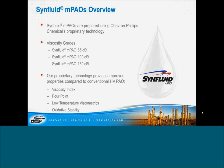Thank you very much, Myles, and thank you, Amy, for that introduction. We'll turn and look at the physical properties of the mPAOs. We make three different viscosity grades of mPAO: the 65, 100, and 150. Those are all the nominal viscosities at 100 degrees centigrade. All these materials provide improvements in the areas of viscosity index, pour point, low-temperature viscometrics, and oxidative stability. Those four main points are the primary advantages that we see.